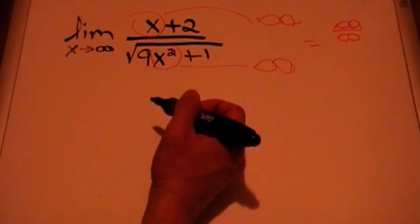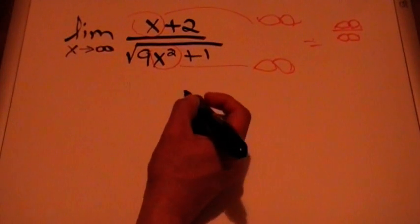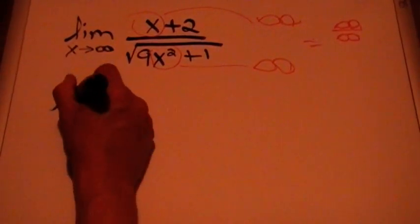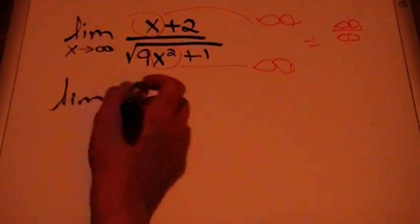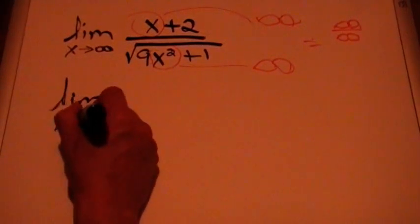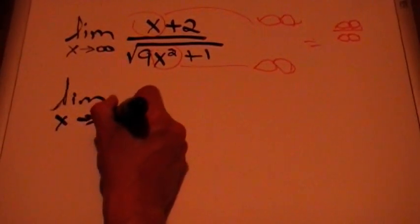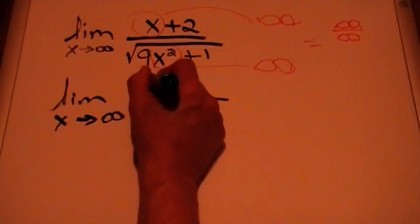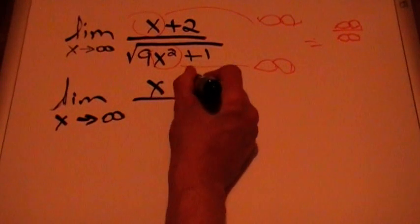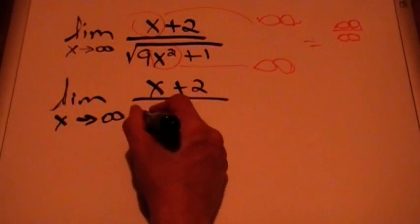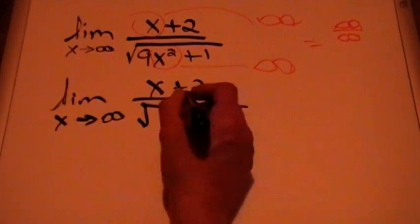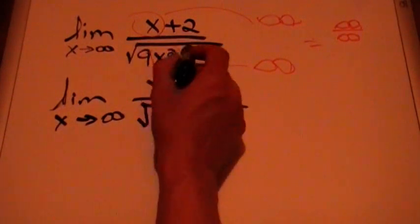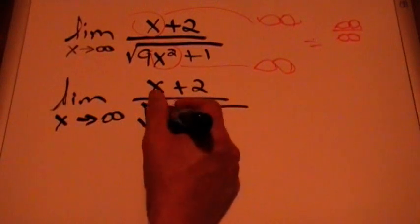Since we have a square root and an x, we can work with the algebra a little bit. So I'm going to write the limit as x approaches infinity of (x + 2) over the square root expression. I'm going to take an x² out from inside the square root — watch what I'm doing.